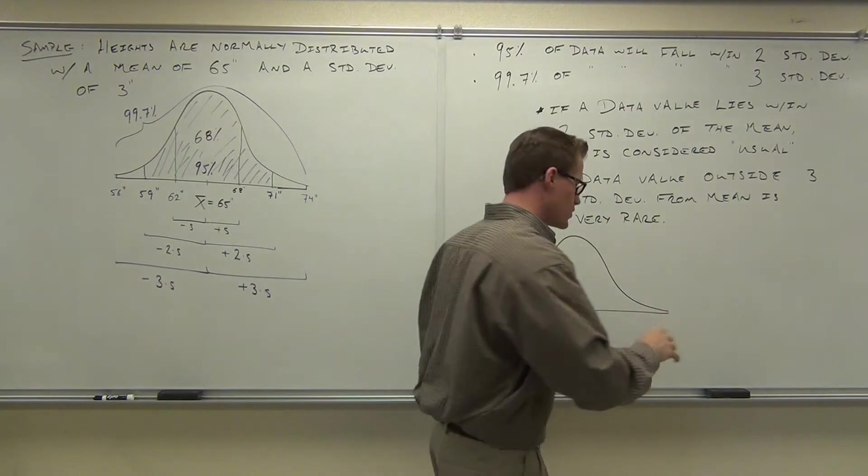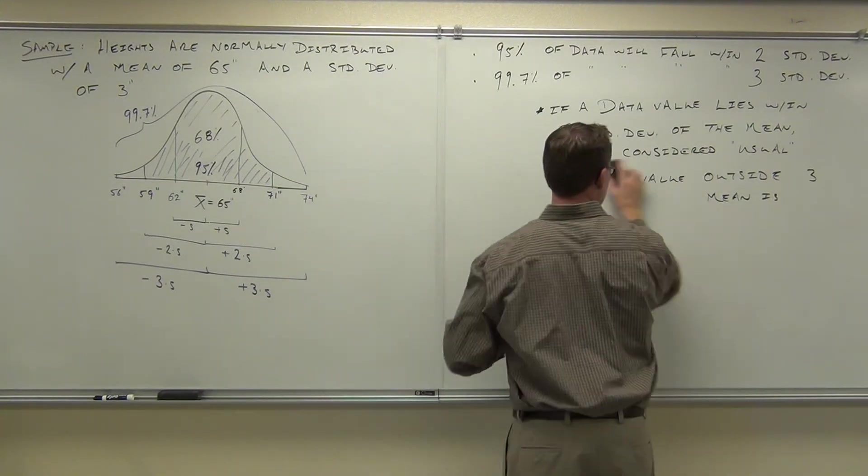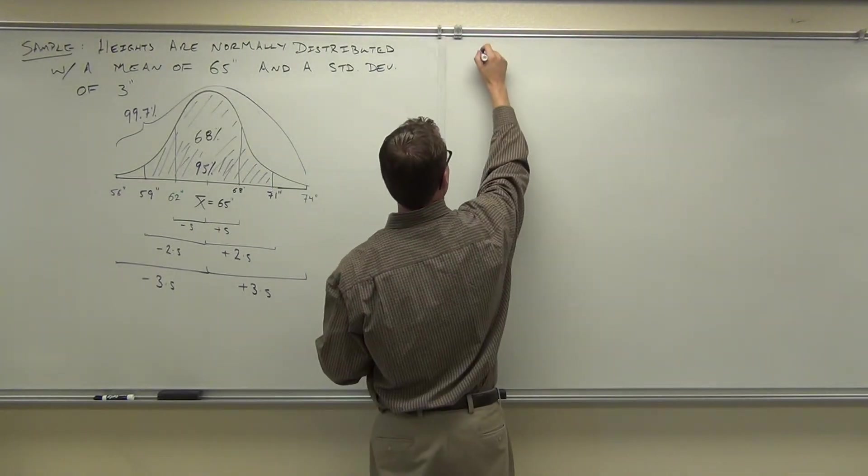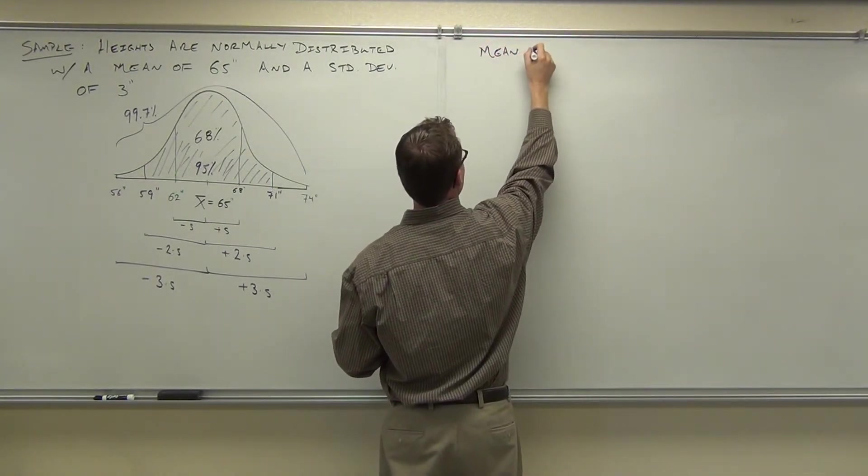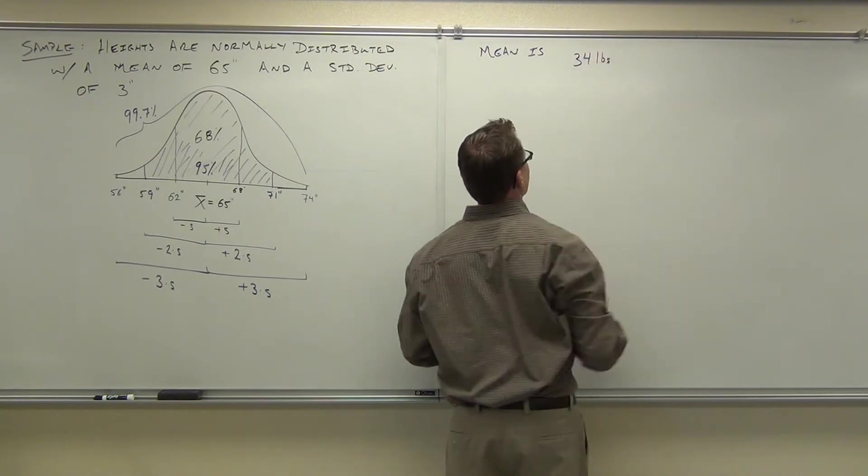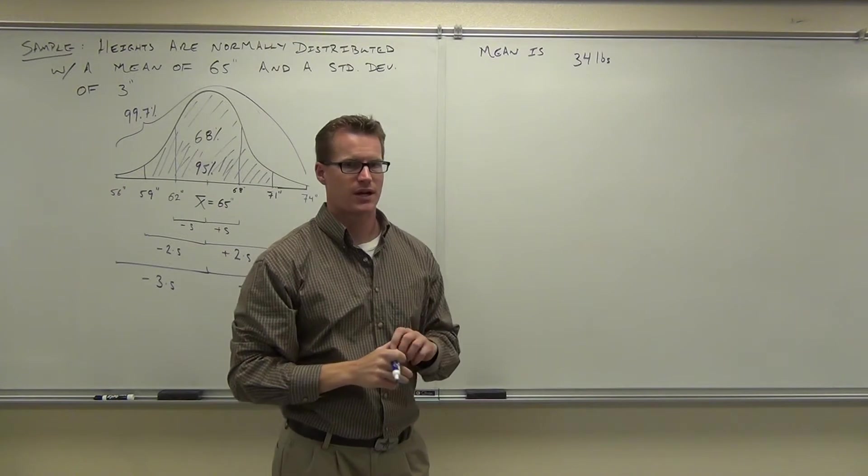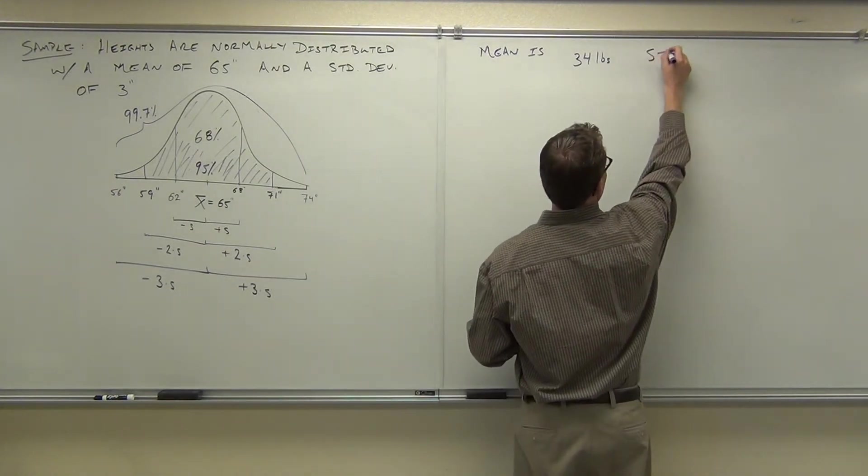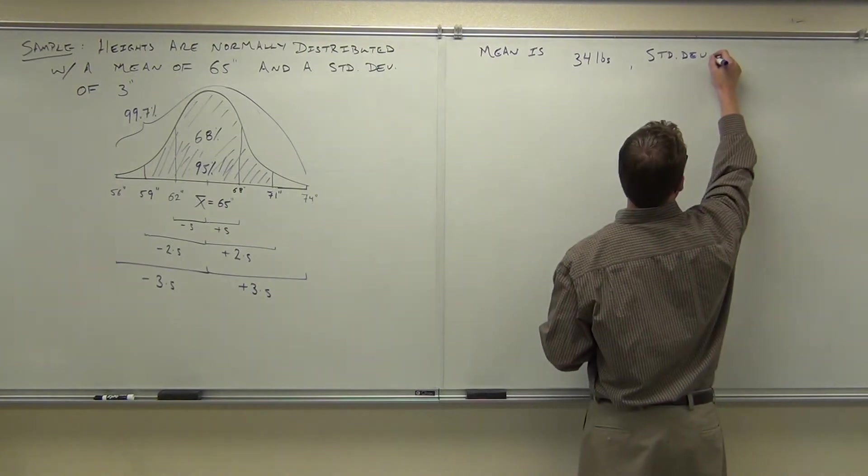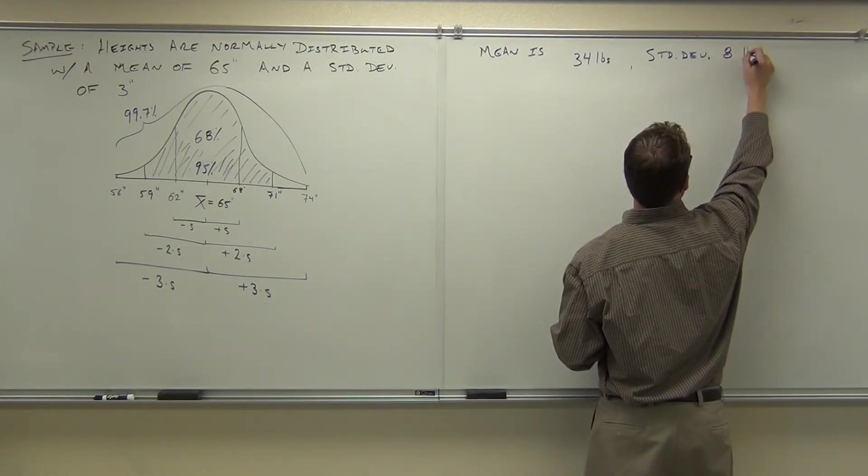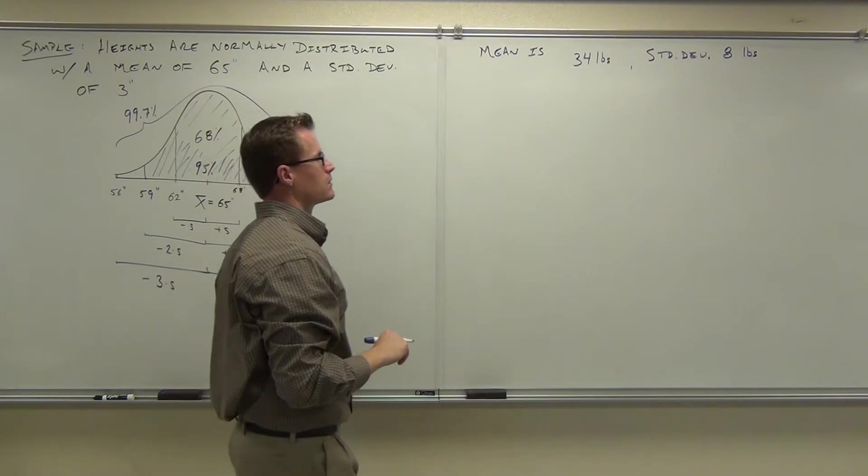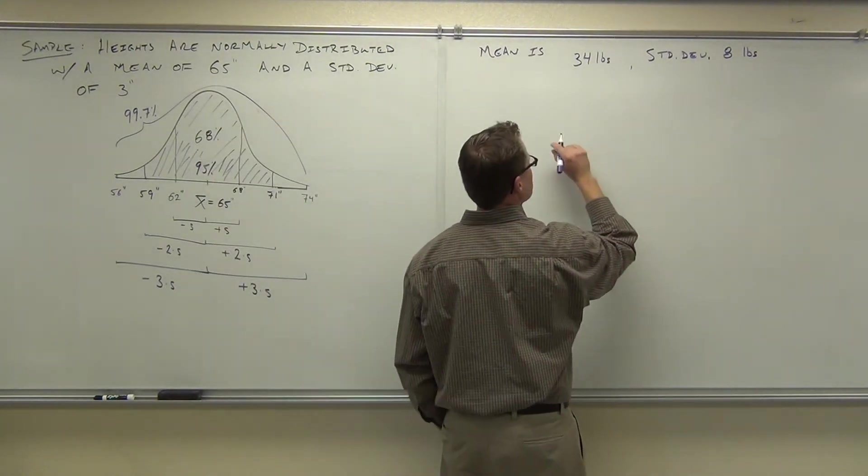I'm going to have you do one of your own just to make sure that you can get it. Mean is 34 pounds. 34 pounds. Remember, LBS at the very end stands for pounds. Mean is 34 pounds. Standard deviation is eight pounds.